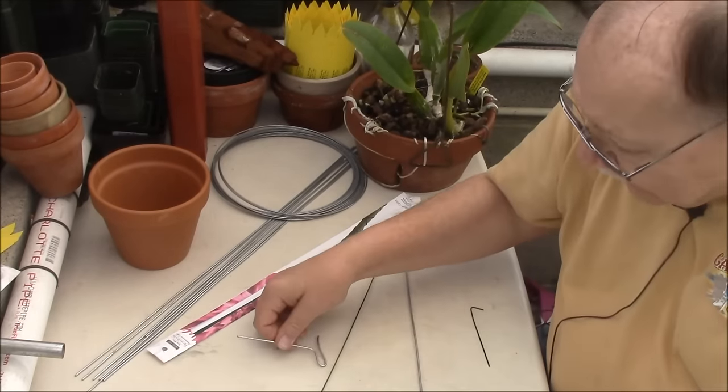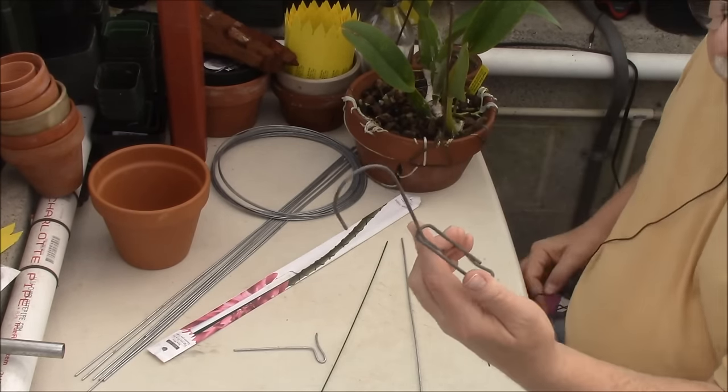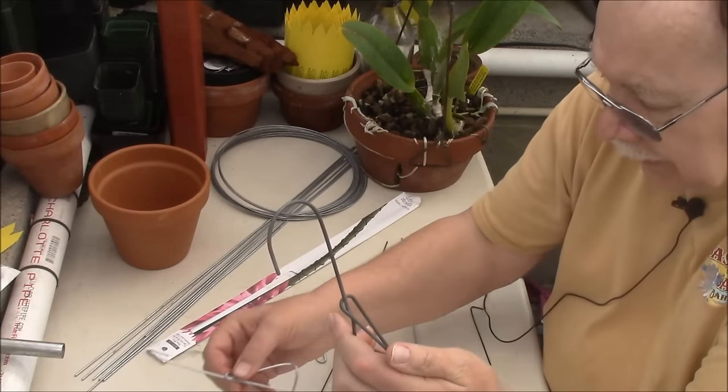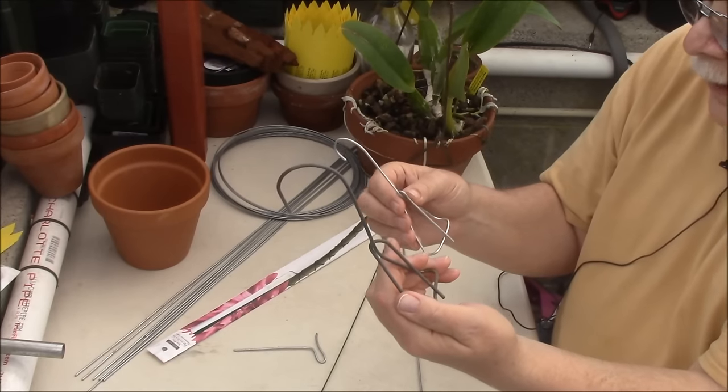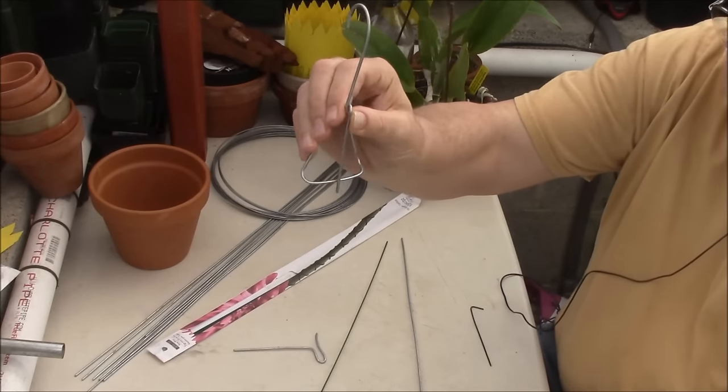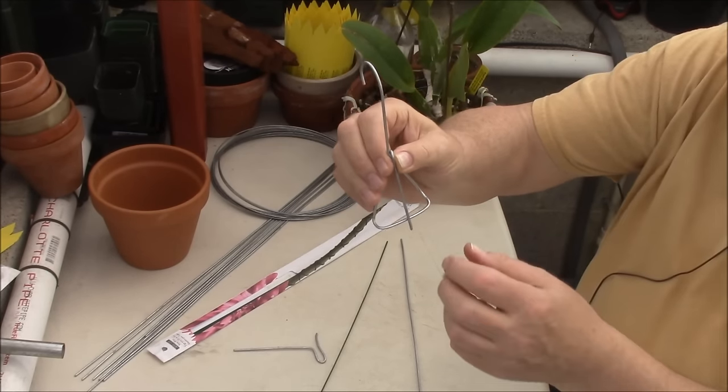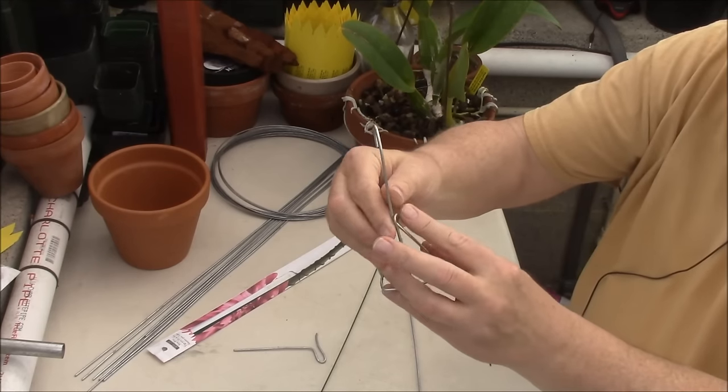The next thing is the single wire hanger. Now these are pretty difficult to make. What I have done here is I used this as a model and made this one, and when you make these it's best if you start from this end here and then just work your way around.